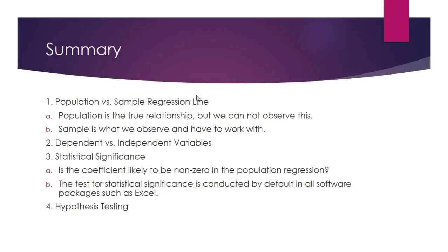Let's go through a brief summary of each concept. First, population regressions and sample regressions: the population regression is the true relationship between X and Y, but we cannot observe it. The sample regression is what we do observe, and we use it to make inferences about the true relationship. Second, dependent and independent variables: the dependent variable is affected by the independent variable — for example, sales was the dependent variable. The independent variable, such as advertising expenditures, is not affected by the dependent variable, so causality runs one way. Third, statistical significance: is the coefficient likely to be non-zero in the population regression? If statistically significant in the sample regression, the answer is yes; if insignificant, the answer is no.